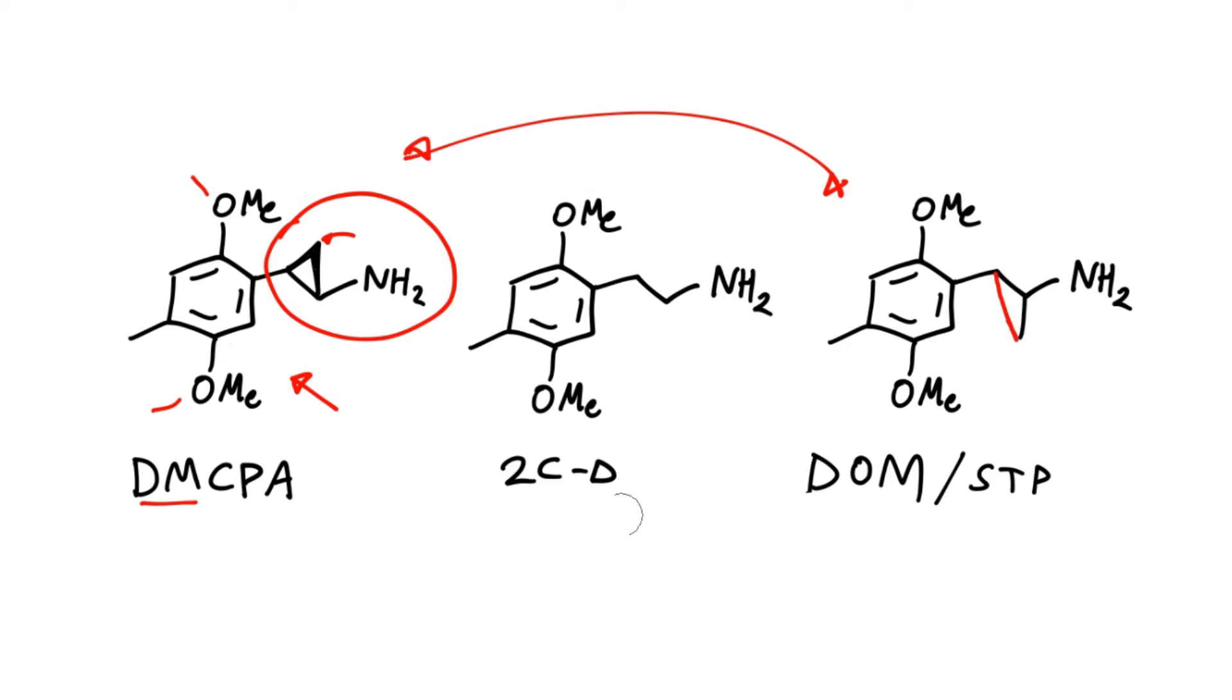In terms of the activities, DMCPA has an effective dose in man, according to the Shulgin scale, about 20 milligrams, which is rated at plus 3, which makes it actually more potent than the phenethylamine analogue 2CD by about twofold. And there are some error bars on these measurements, of course. And then DOM is still the strongest, coming in at 5 milligrams for the amphetamine analogue.